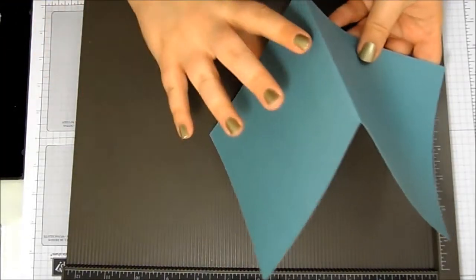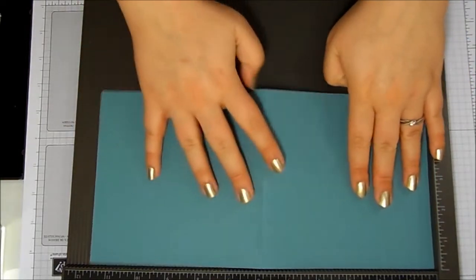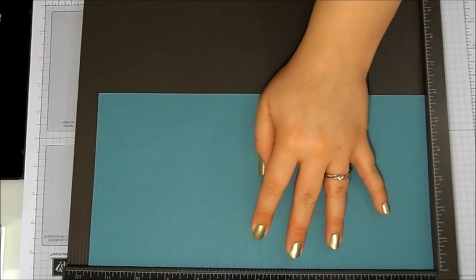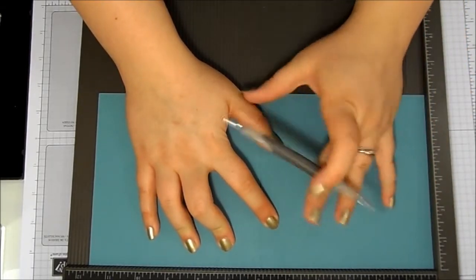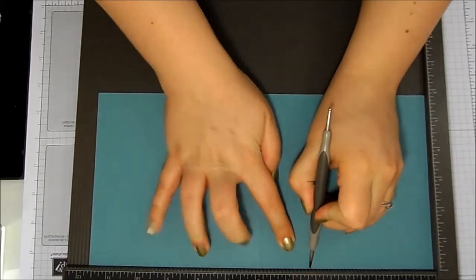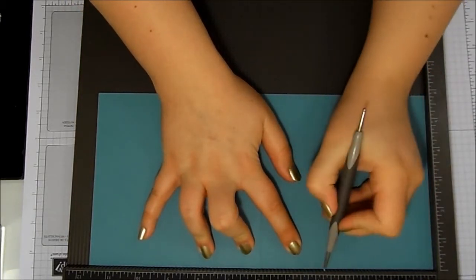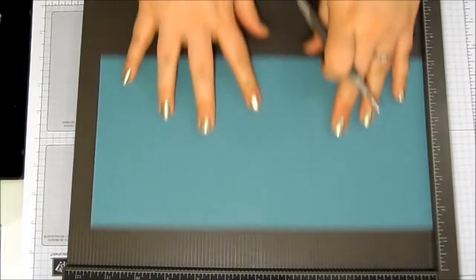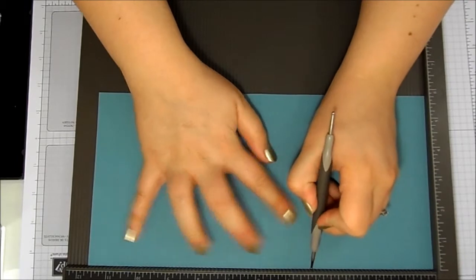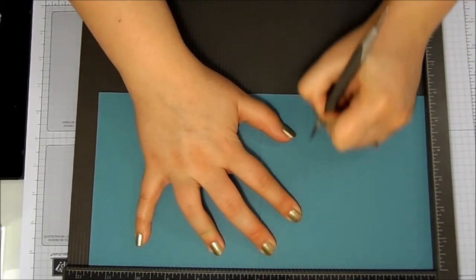Then with your Simply Scored, open that card back out again, and with this crease kind of facing up at you so it's like a tent, put it on your scoreboard and you need to score at four and one eighth of an inch or ten and a half centimeters if you're doing in metric, and then turn it around that way and score it again at four and one eighth or ten and a half centimeters.